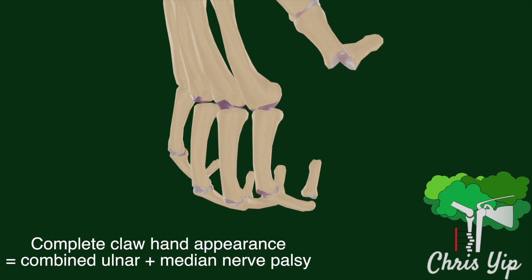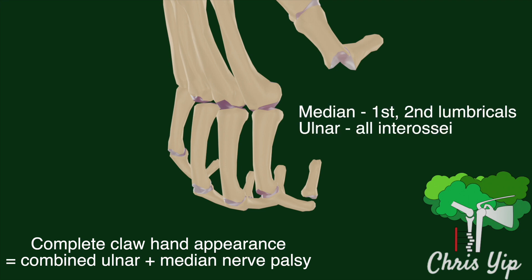This is because the median nerve supplies the first and second lumbricals of the first and second digits, whilst the ulnar nerve supplies all the palmar and dorsal interossea in the hand. Both groups of muscles need to be affected to have the classical claw hand deformity.